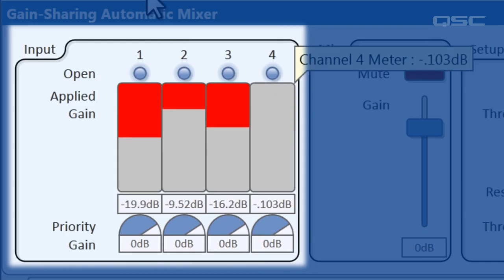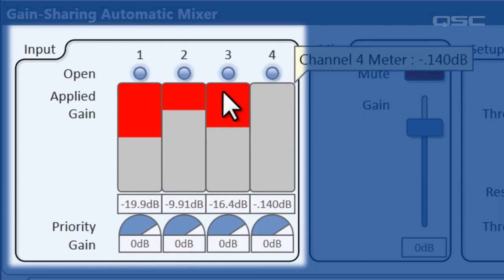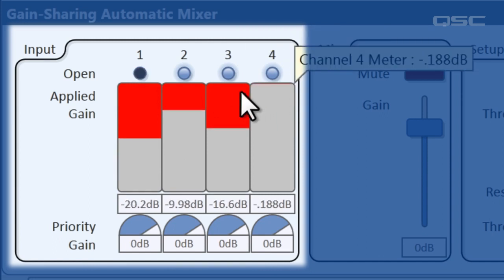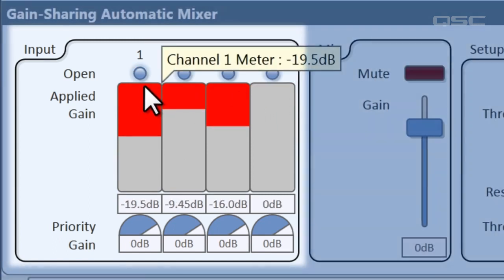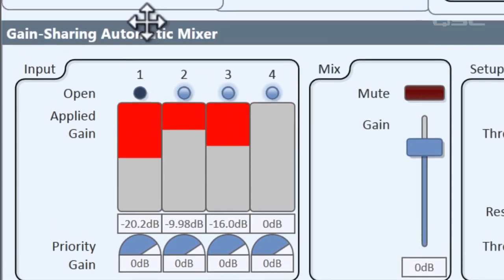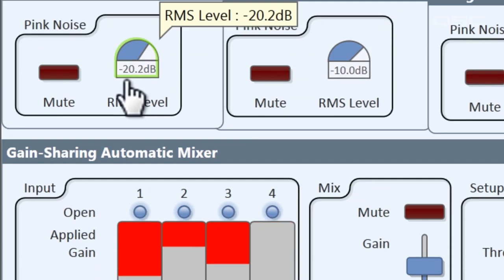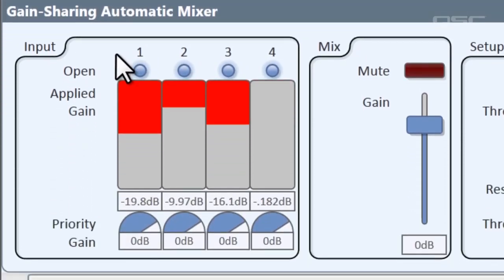If the gate is not open, that line isn't being mixed into the output. Right now, Paul, George, and Ringo are all open, but John is floating in and out because he's talking so low — down at negative 20 decibels — so sometimes he's gated open, sometimes he's not.